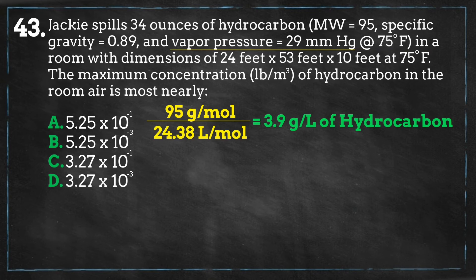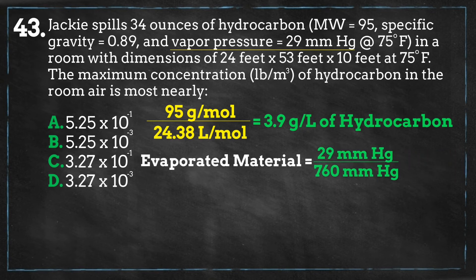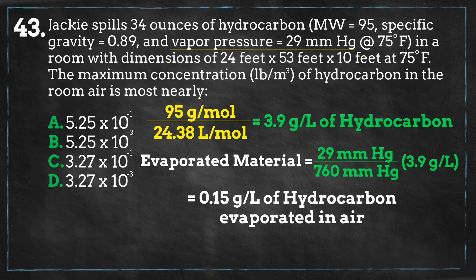We have the vapor pressure of the material that's 29 millimeters of mercury, so we can divide this partial pressure by the room's pressure of 760 millimeters of mercury to get the ratio of amount of material that has evaporated. We multiply this by our previous answer of 3.9 grams of hydrocarbon per liter of air to get the amount of material per unit volume, and we get about 0.15 grams per liter of hydrocarbon that will be saturated.